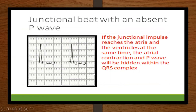If the junctional impulse reaches the atria and the ventricles at the same time, the atrial contraction and P wave will be hidden within the QRS. We see here where we can't distinguish our P wave before the QRS because it's hidden.